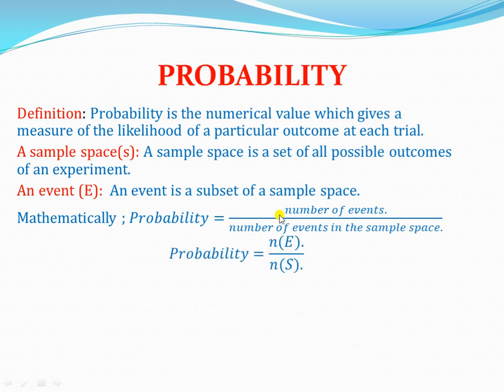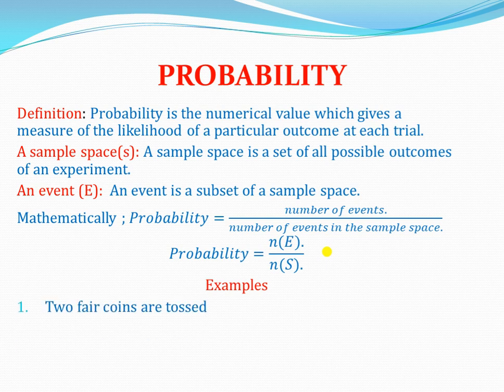We have abbreviated N(E) to represent the number of events, and N(S) to represent the number of events in the sample space. Let's look at a few examples.